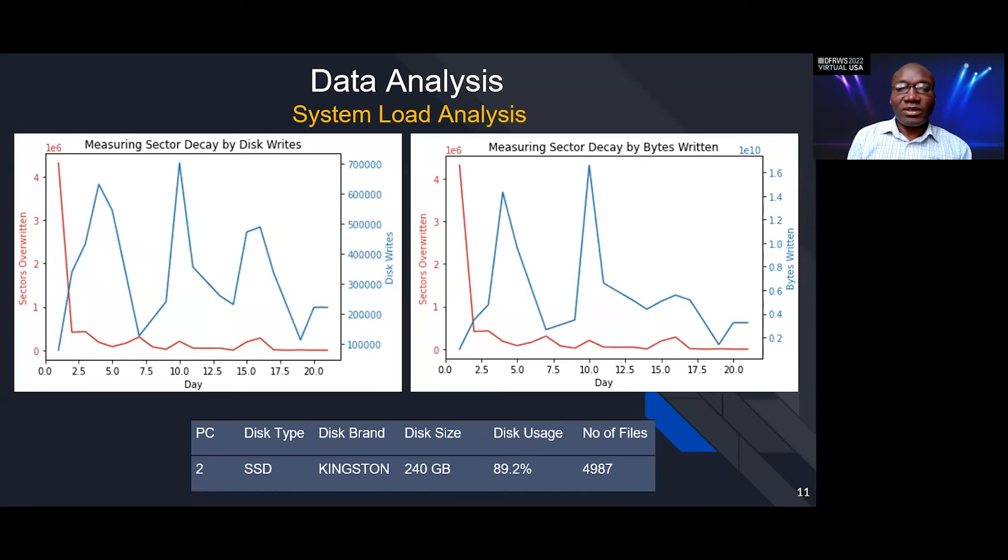This is also a similar one where we see that there's a correlation between like the 7.5 and the 17.5. We see that where one graph rises, the other also rises. This shows that there is a correlation. If the correlation does not exist also, but at certain points we find that there is a correlation. Same information is mirrored on the graphic to the right, but this time we're looking at the sector decay versus the number of bytes written.